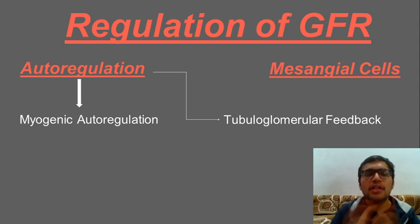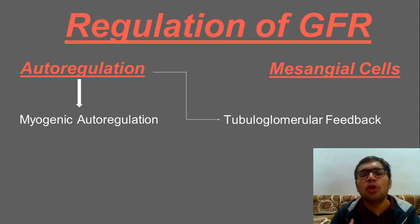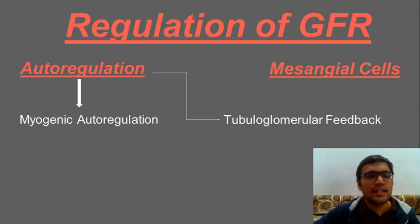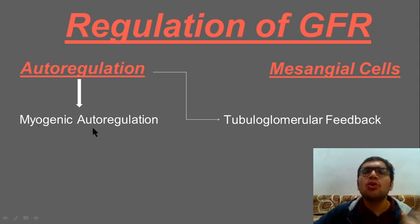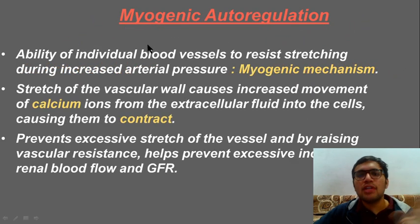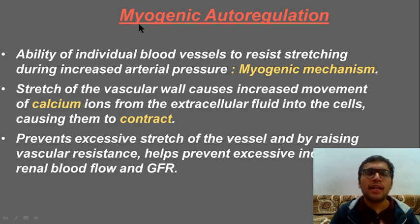Don't worry about these terms seeming complex — just break them down. Myo means muscle, genic means due to, so myogenic autoregulation is autoregulation happening due to muscle. Let's focus on what myogenic autoregulation is.